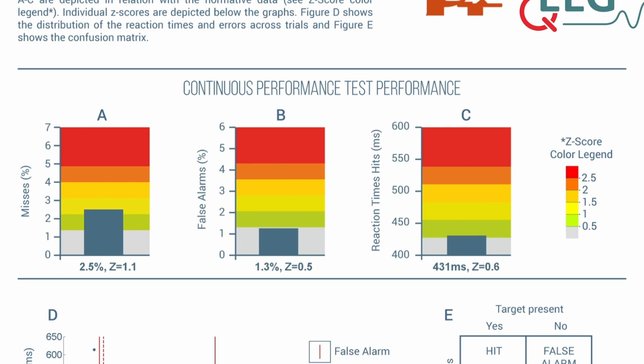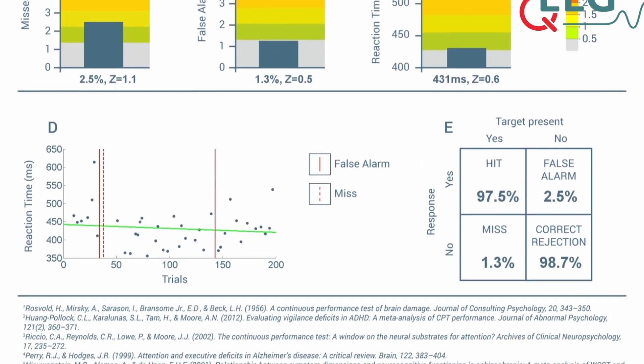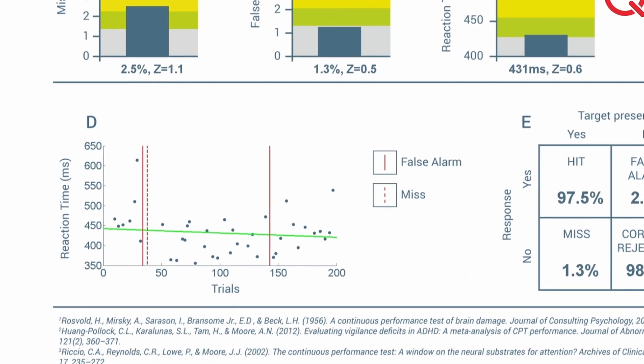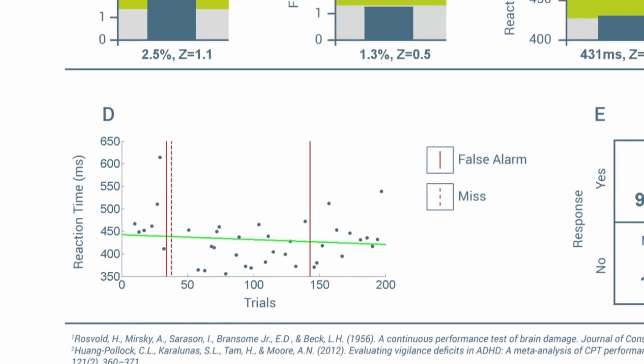Figure B shows the false alarms percentage, which was 1.3 percent in this example, corresponding with a Z-score of 0.5, which is right at the border between the gray and green Z-score bands. Figure C shows the average reaction time for hits, which was 431 milliseconds in this example, corresponding with a Z-score of 0.6, which falls into the green Z-score band. Figure D shows the distribution of reaction times and errors across the trials of the CPT. Each dot represents the reaction time of a single button press. The solid vertical red lines represent the false alarms, two in total for this example, and the single dotted vertical red line represents a miss.